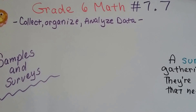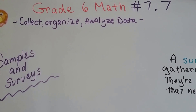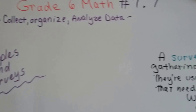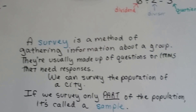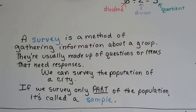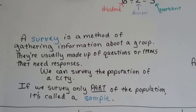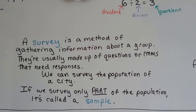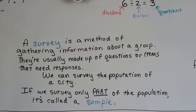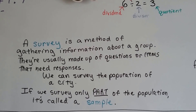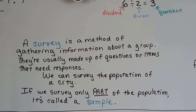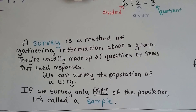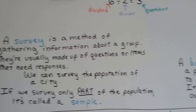Grade six math, number 7.7: Samples and Surveys. A survey is a method of gathering information about a group. They're usually made up of questions or items that need responses or answers. We can survey the entire population of a city, but if we survey only part of the population, it's called a sample.